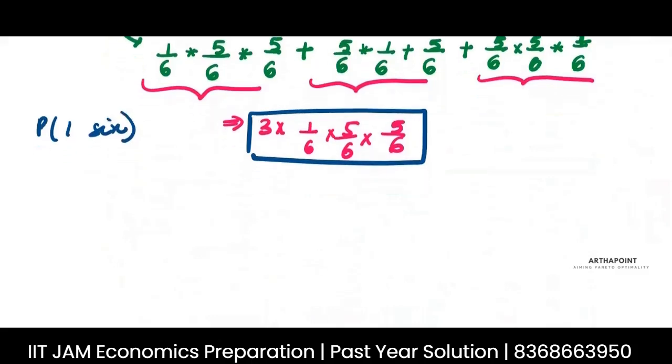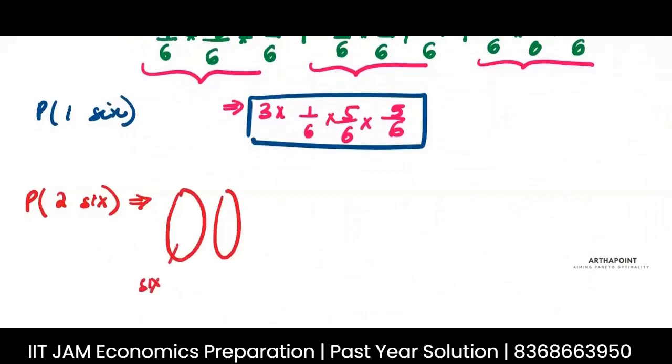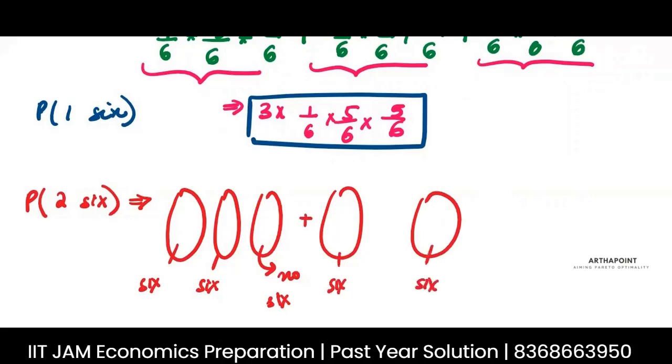So this is the probability that you will get exactly one six. Now let us find out the probability that you will get two sixes. So you are getting two sixes. This means the first dice is giving you a six, the second dice also gave you a six, and the third dice did not give you a six. Again there can be various cases.